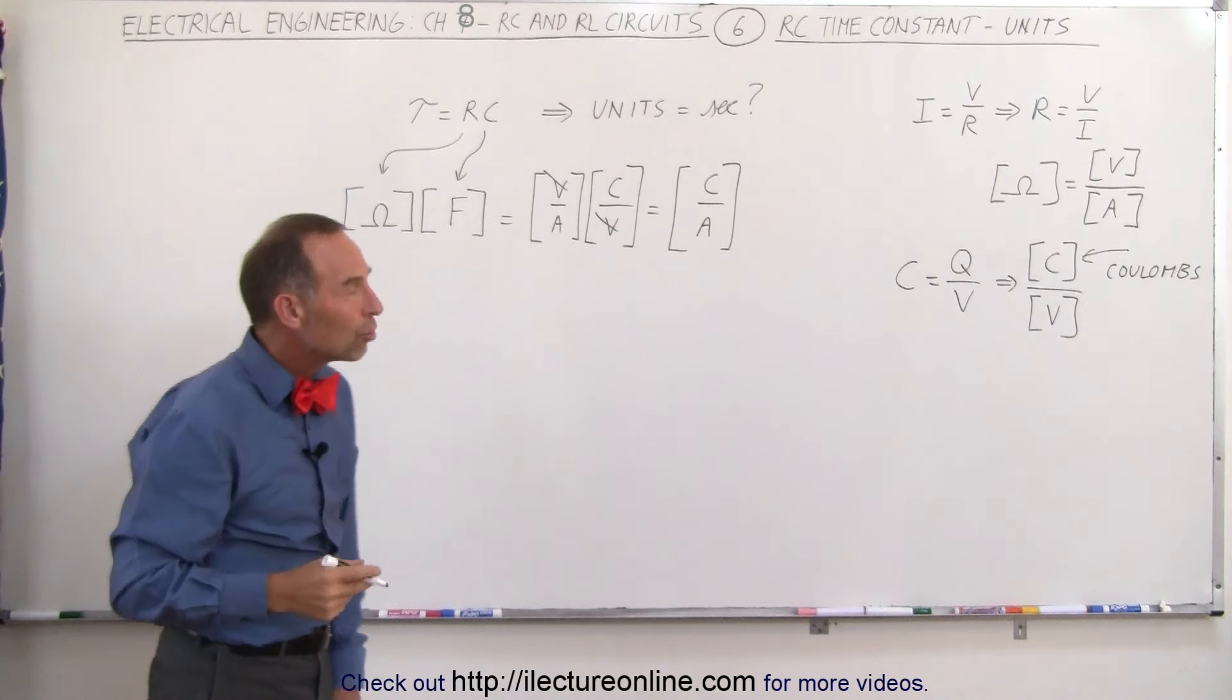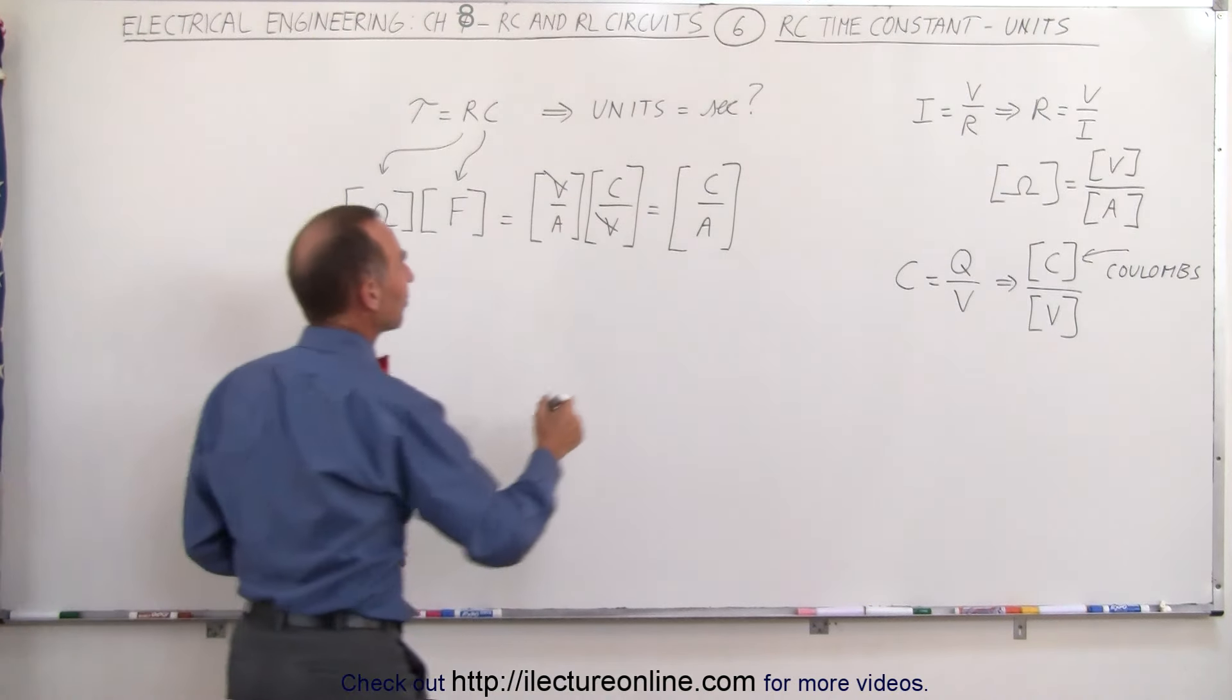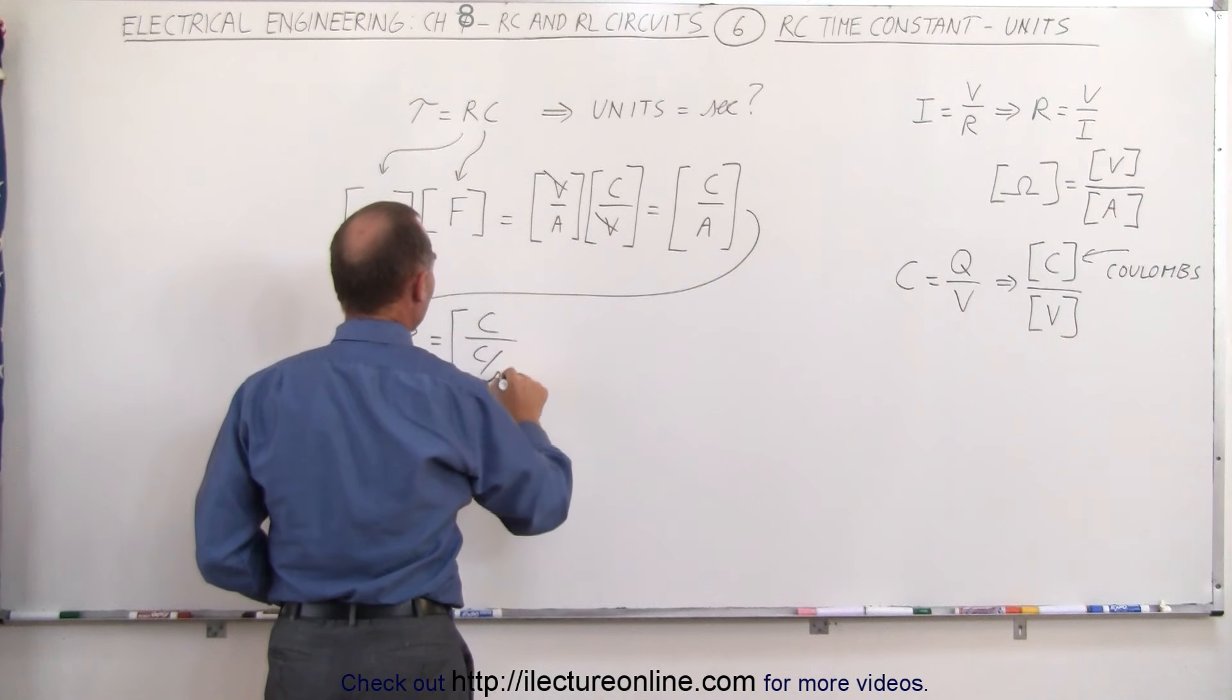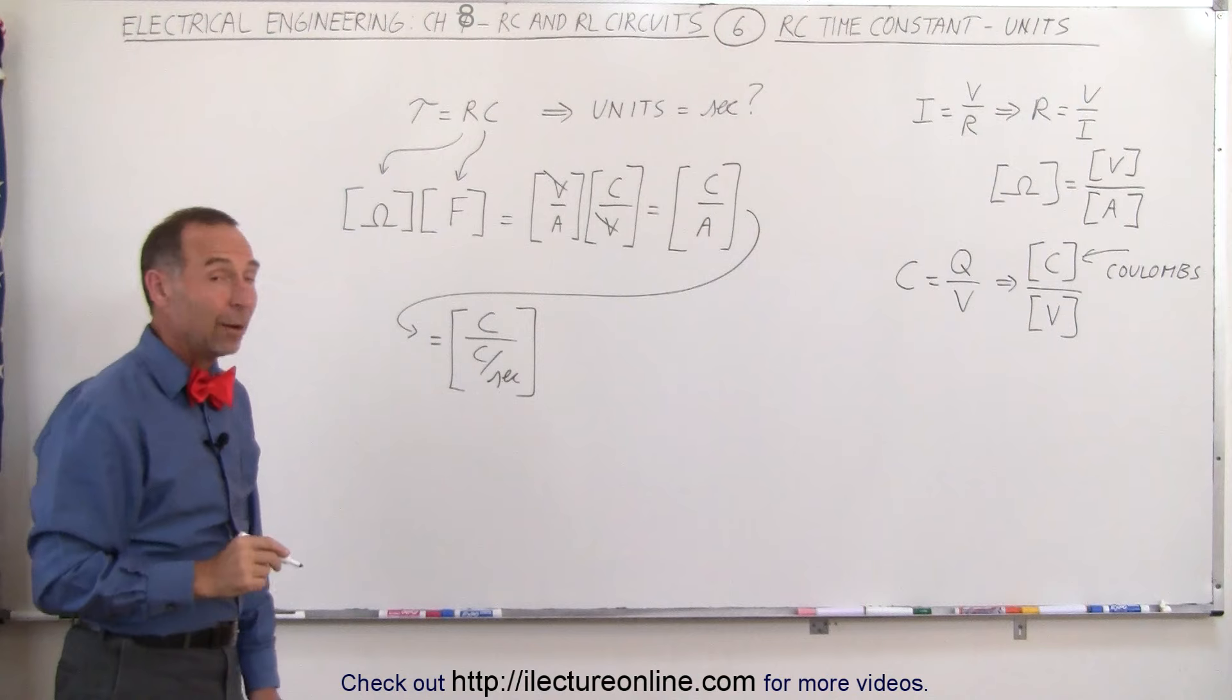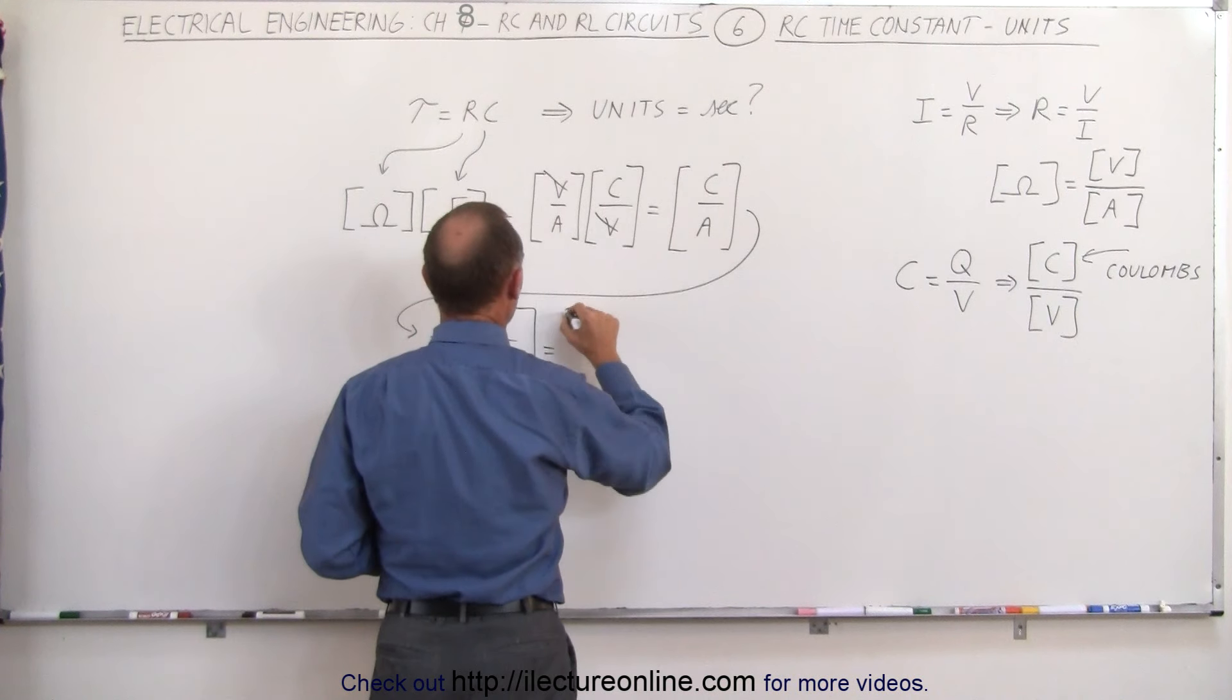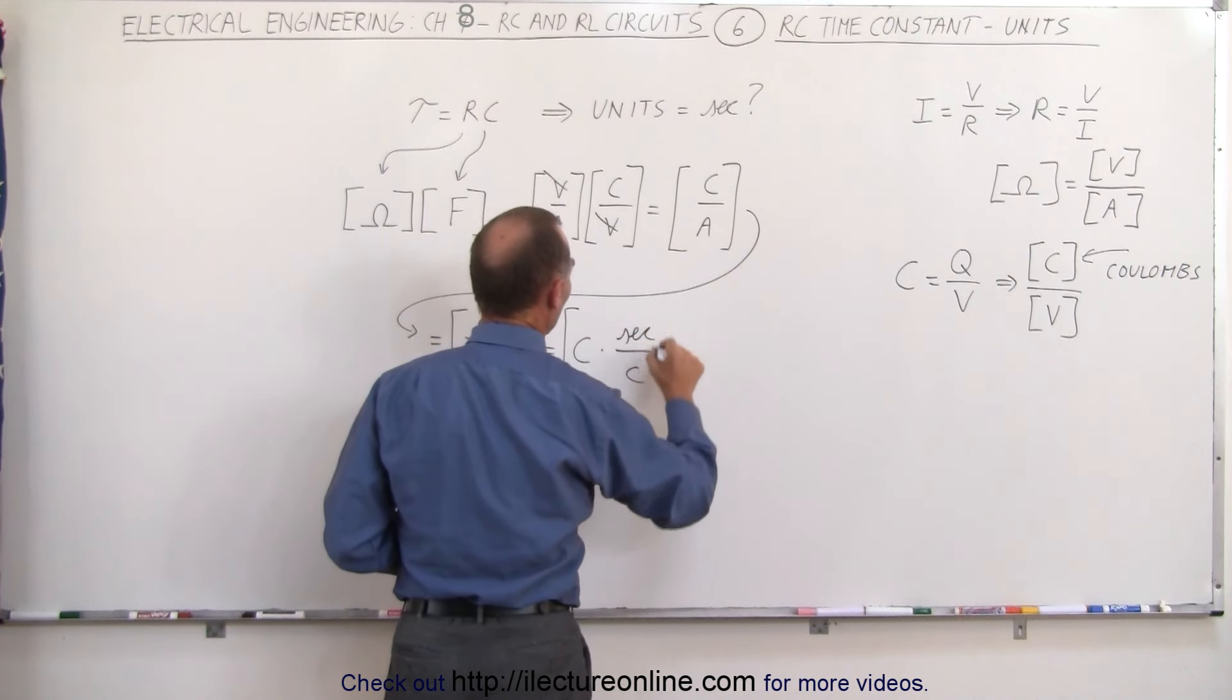Now amps is a unit of current. That's the number of coulombs per second, which means, we'll go over here, that this can be written as coulombs divided by coulombs per second. And now we know that when we divide by a fraction, it's the same as multiplying by its inverse. So this can be written as coulombs times seconds divided by coulombs.